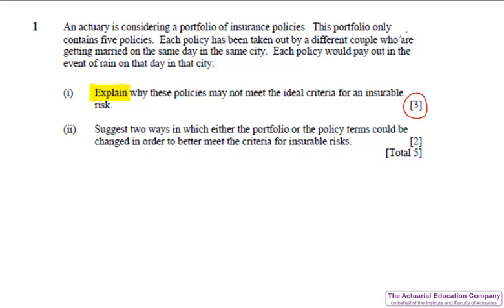Given that there's three marks, you're probably thinking of about three points to make. Since there are only five policies in the portfolio, it's hardly pooled. Policy pays out in the event of rain, which is hardly a small probability, and the couples are getting married on the same day in the same city, means that the claims are hardly likely to be independent.